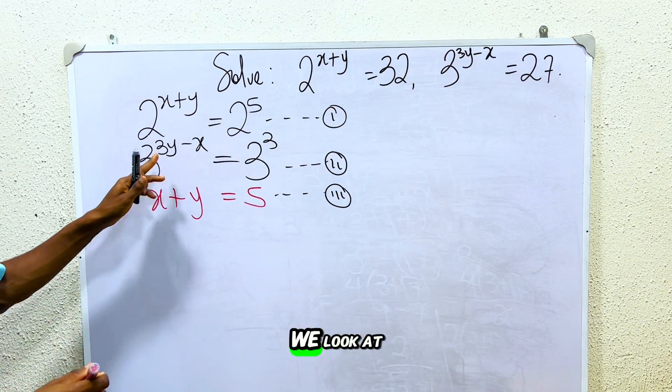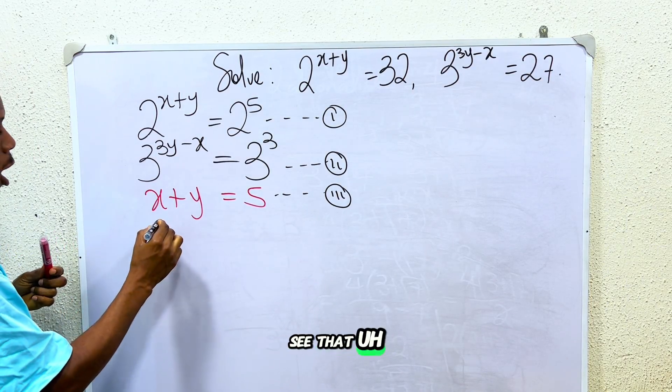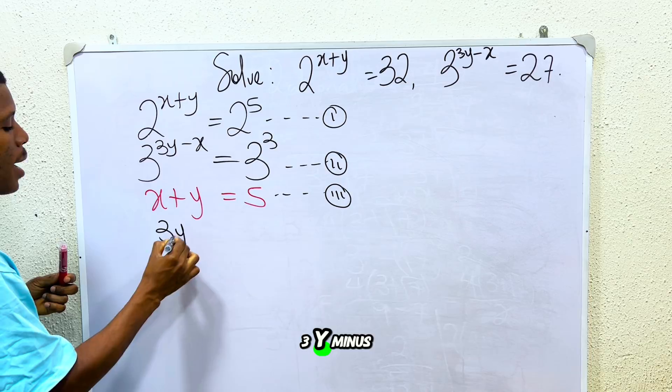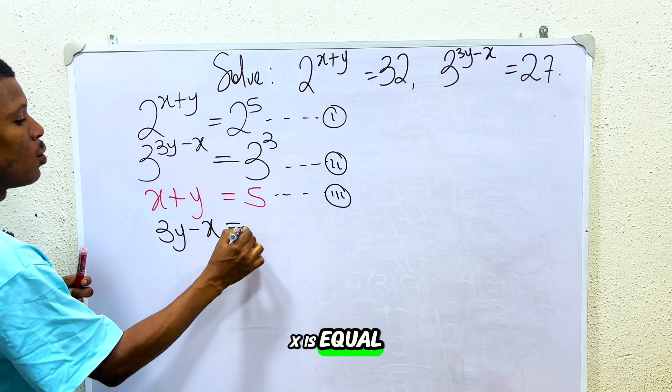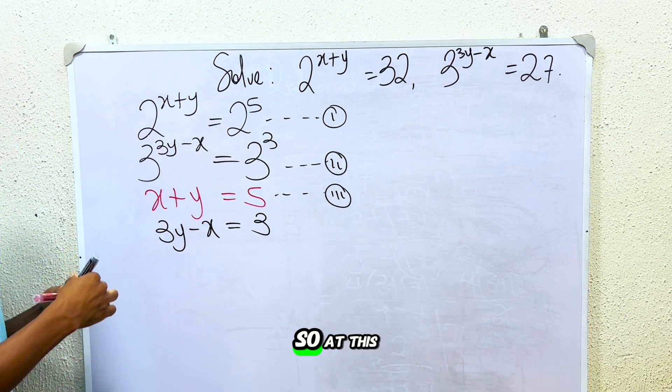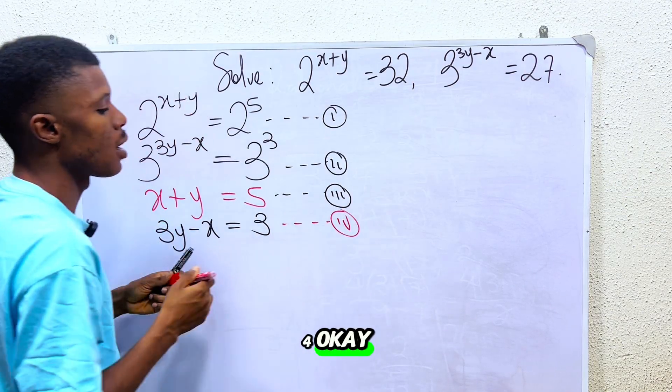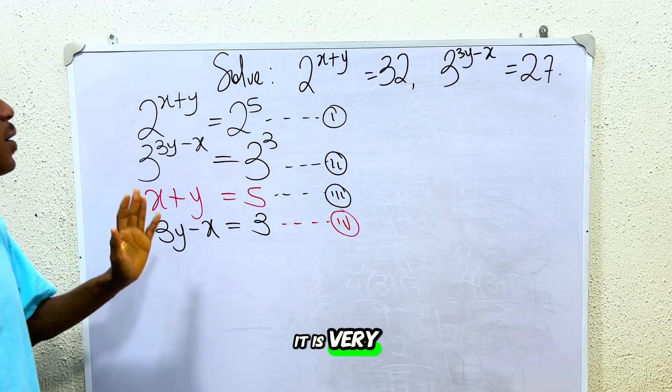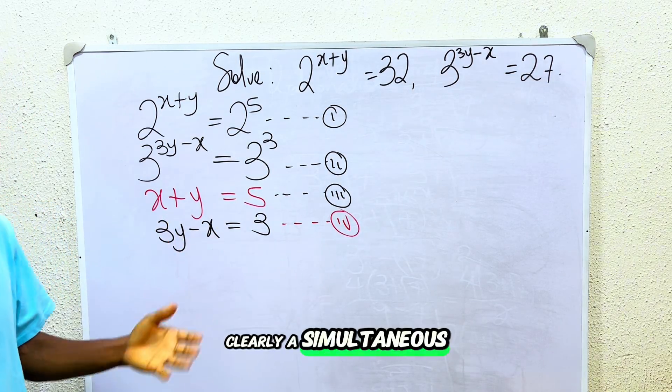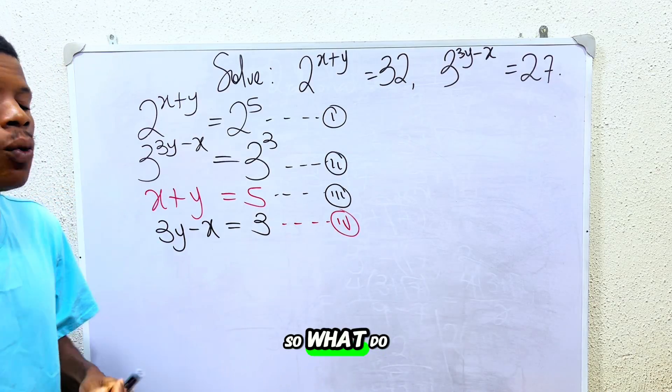Then the next thing we do is that we look at this one. We can also see that 3y minus x is equal to 3. So at this point we can call this equation 4. Since we have this, it is very easy to see that this is clearly a simultaneous equation.